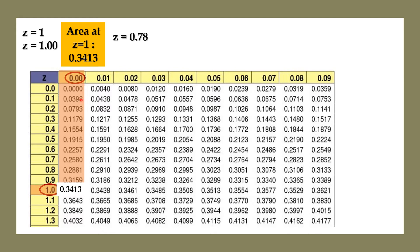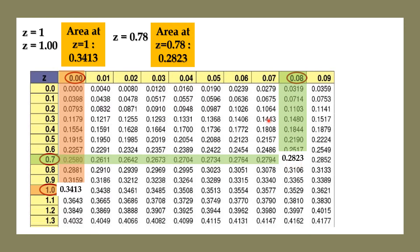Another example: z equals 0.78. This value is already in three-digit form. We locate the first two digits, 0.0, on the left column — here is the location. The third digit is 8, located here. Their intersection is at 0.2823, which is the area at z equals 0.78.